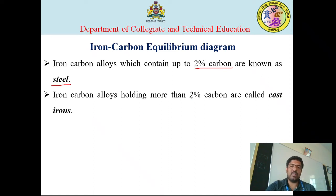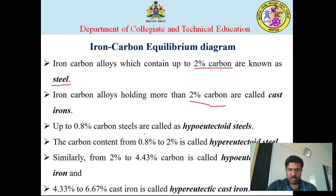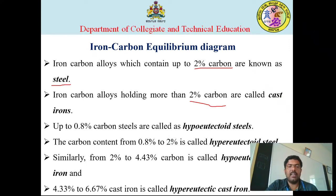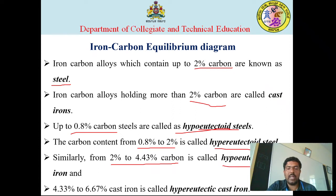Anything which is more than 2% carbon, that iron-carbon composition is called cast iron. As discussed in the last session, up to 0.8% carbon steel we call hypo-eutectoid steels. At 0.83% carbon it is eutectoid steel, and between 2% and 4.3% carbon it is hypo-eutectic cast iron.